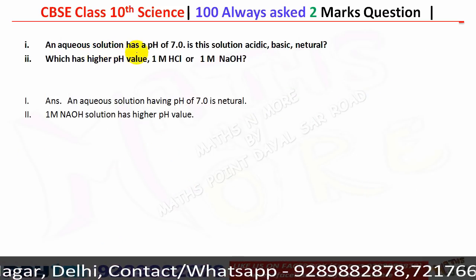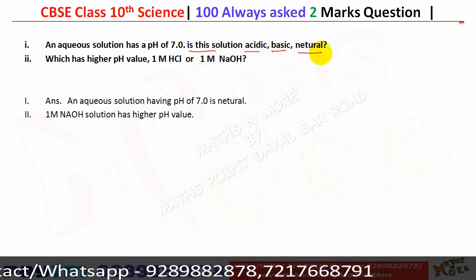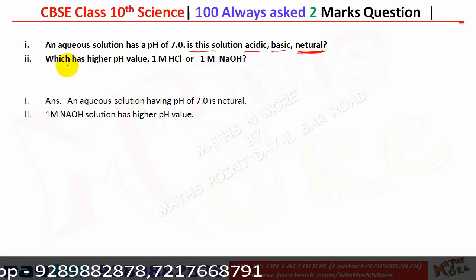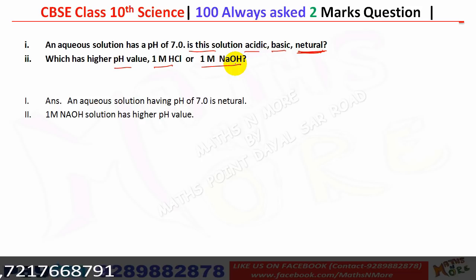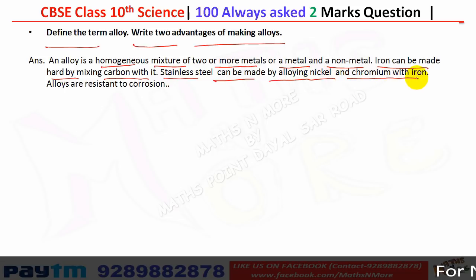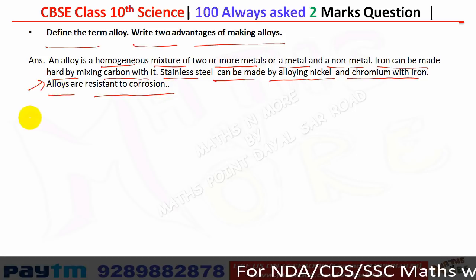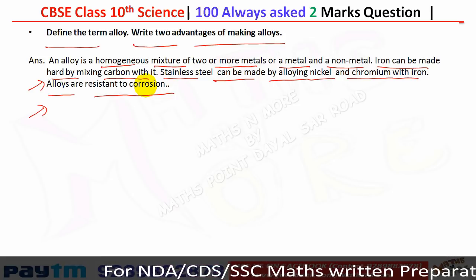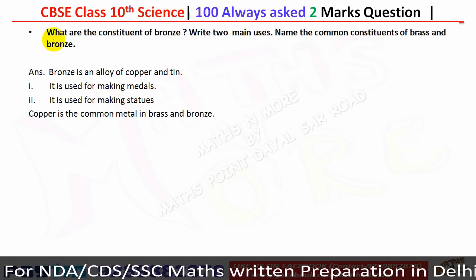An aqueous solution with pH 7 is neutral. Between one mole of HCl and one mole of NaOH, NaOH solution will have the higher pH value. An alloy is a homogeneous mixture of two or more metals, or a metal and a non-metal. Iron can be made hard by mixing with carbon, and stainless steel is made by alloying nickel and chromium with iron. Alloys are resistant to corrosion and stronger than the individual metals.